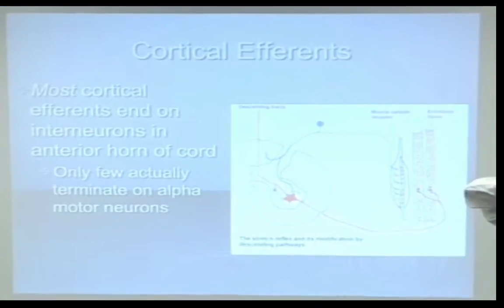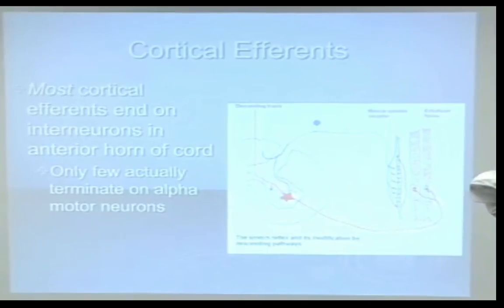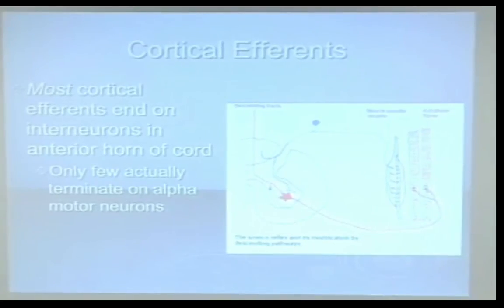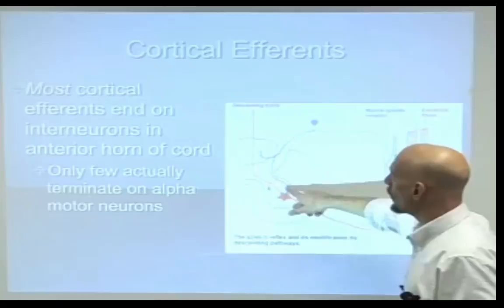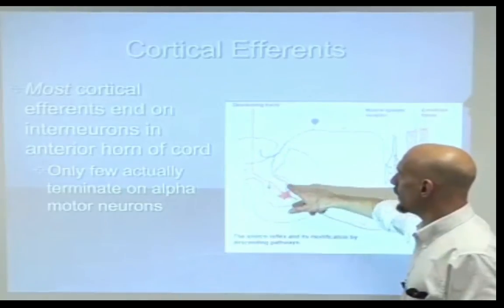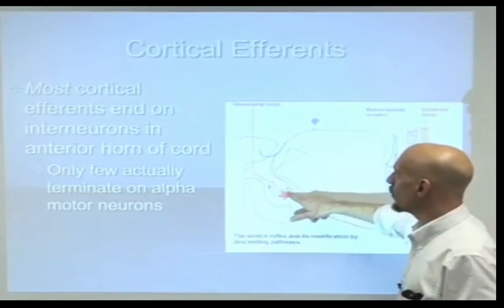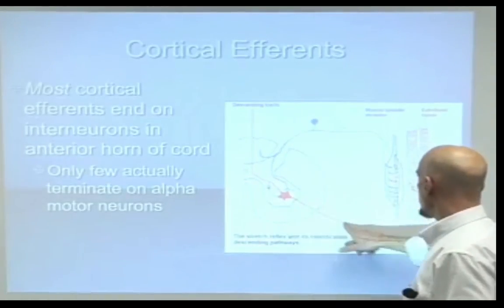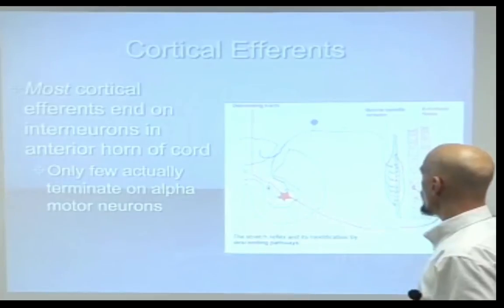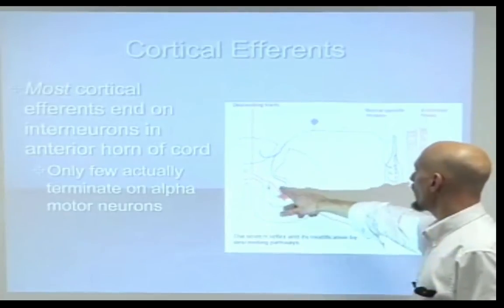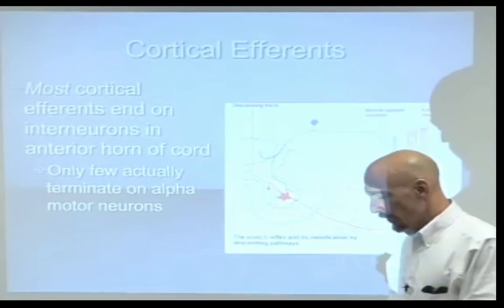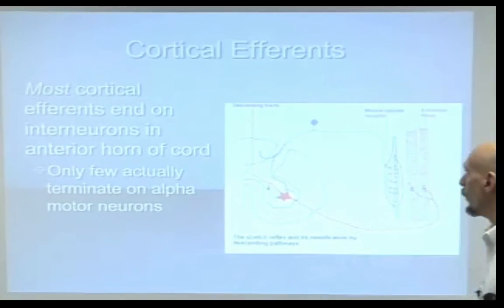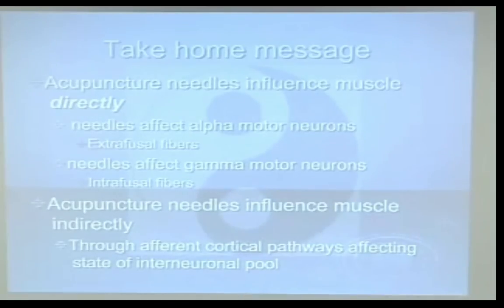Cortical efference — brain stuff — corticospinal, rubrospinal, that kind of pathway, mostly ends on interneurons in the anterior horn of the cord. Only a couple actually end on the alpha motor neuron itself. Most of them end on other neurons, a lot of them inhibitory, which help control and attenuate that function.